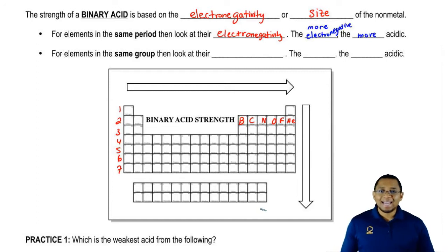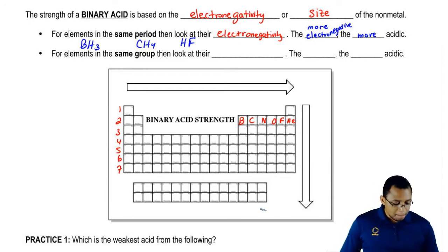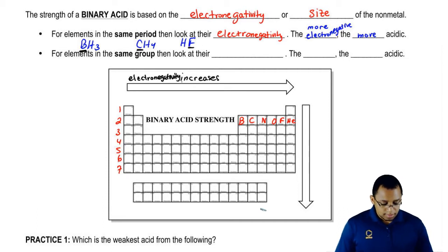So if we're taking a look at certain examples, let's say we're looking at CH4, HF, and BH3. So we're going to say here that boron, carbon, and fluorine are all in the same period. So in terms of electronegativity, remember it increases going from left to right. And because of that, because it increases going from left to right, we're going to say fluorine is the most electronegative out of these three nonmetals that I've underlined.